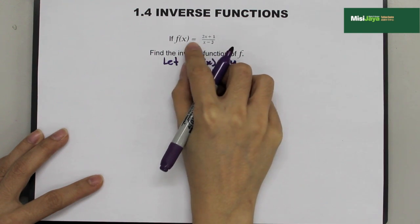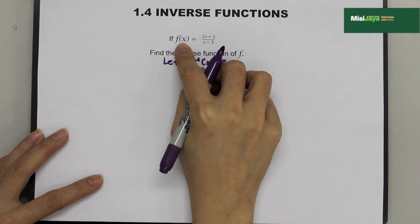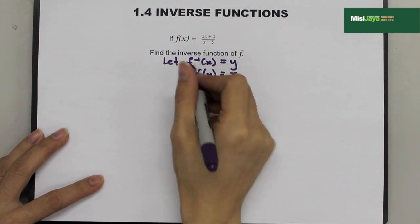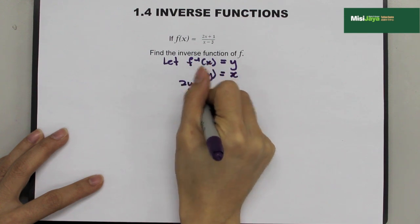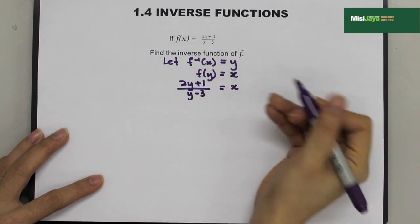If it's f(x), then on the right hand side, it will be in terms of x. If it's f(y), then, on the right hand side, it will be in terms of y. So, (2y + 1)/(y - 3) = x.